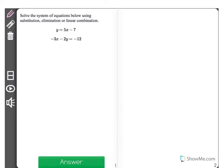Solve the system of equations below using substitution, elimination, or a linear combination. y equals 5x minus 7, negative 3x minus 2y equals negative 12.